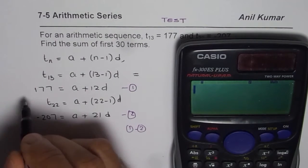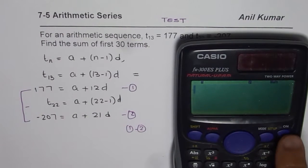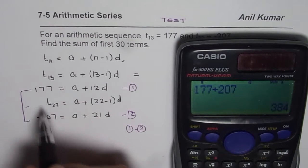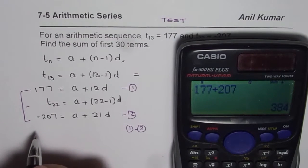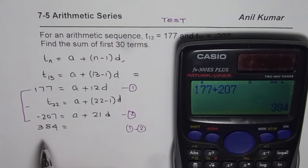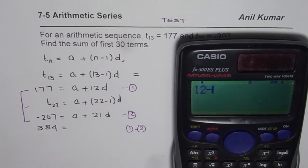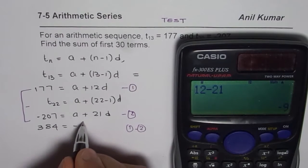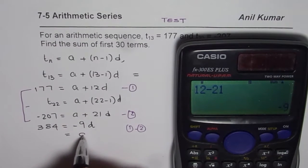When I do 177 minus (-207), they really get added up. So 177 + 207 = 384. We get 384 = (a - a) + (12d - 21d), which gives us 384 = -9d.